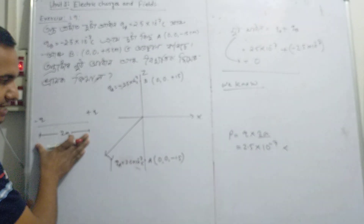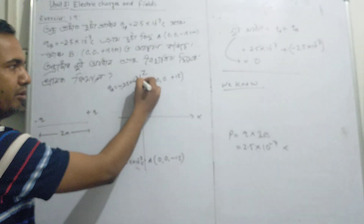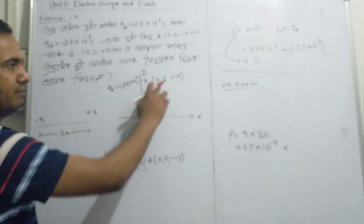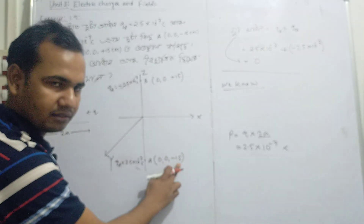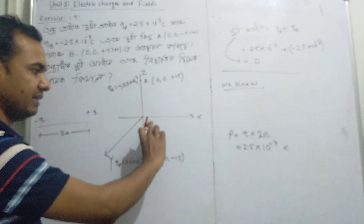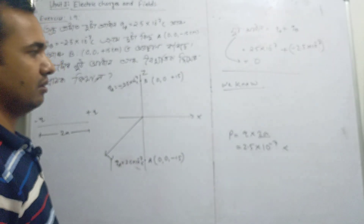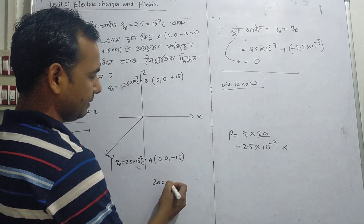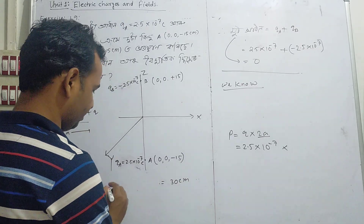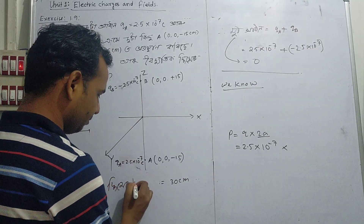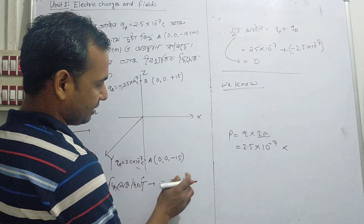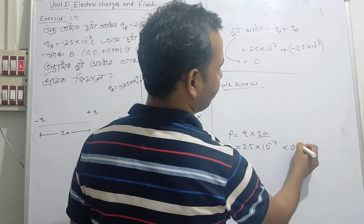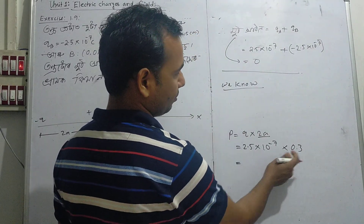From minus Q position to plus Q position is twice a. The A point is at 15 cm above, and the B point is 15 cm down. So the total distance is 15 plus 15 equals 30 cm. Therefore twice a equals 30 cm, which in meters is 0.3 m.